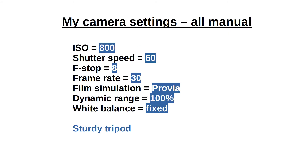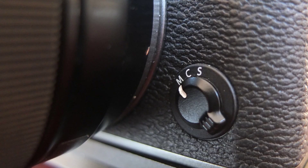All parameters were fixed in all 4 videos. I filmed from a stable tripod at 30fps using Provia film simulation and dynamic range 100%. White balance was fixed, shutter speed was 60, f-stop was 8, and ISO was 800. I focused only once before filming and then set the focus to manual to make sure it won't move.